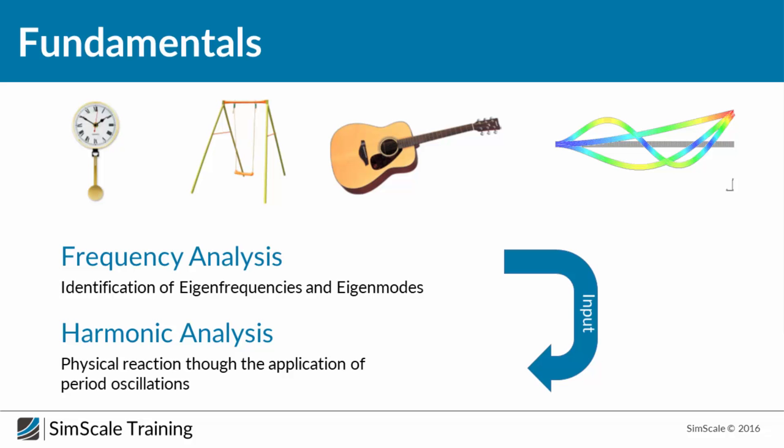Like the last two weeks, we have three steps: first we prepare the geometry for the simulation, then we create a mesh, and based on this mesh we set up the simulation and do post-processing. This time we're going to do a loop - we will use the same mesh for both analyses, and then do a second run using eigenfrequencies as input.